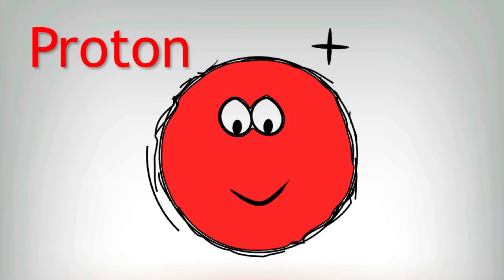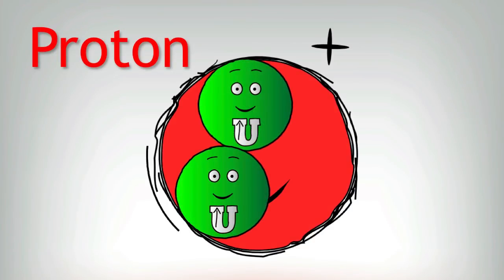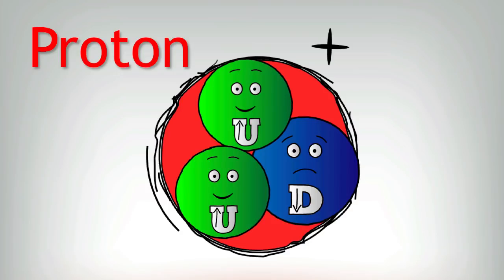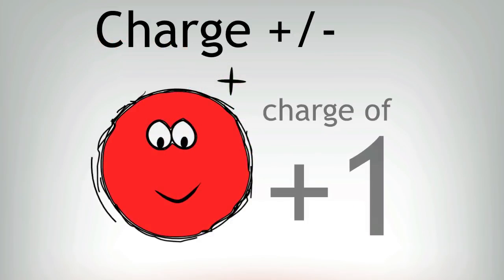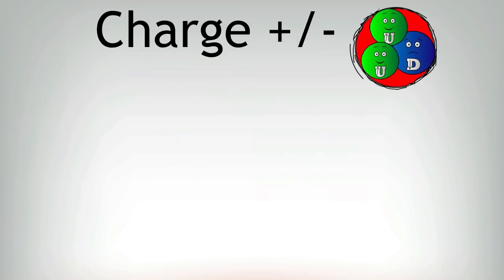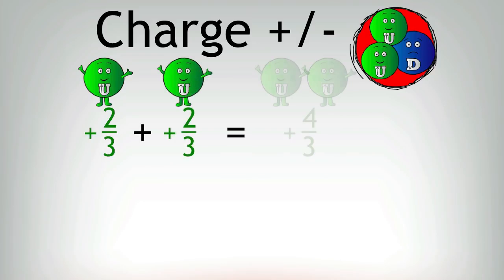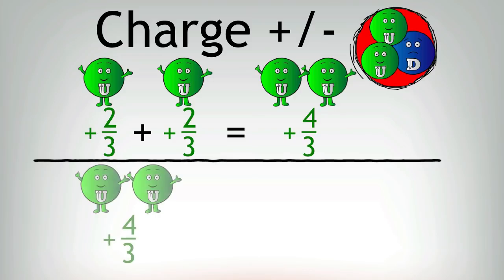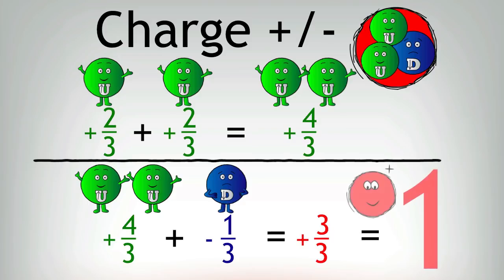The proton was found to be made of two up quarks and one down quark. Now we know that the charge of a proton is plus one. If we look at this in terms of the fractional charges given to quarks, one up quark would have a charge of plus two thirds, so therefore two up quarks would have an overall charge of plus four thirds. Adding in a down quark reduces the overall charge to three thirds, which is the equivalent of one.